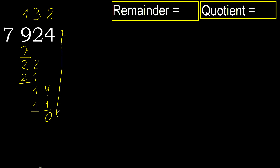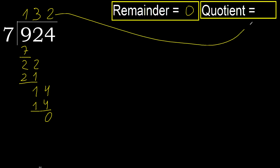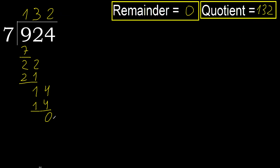There is no next number, therefore finish it. Ok, remainder 0 — therefore 924 divided by 7 is here.